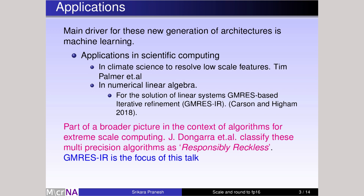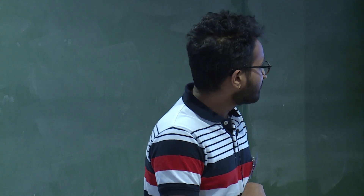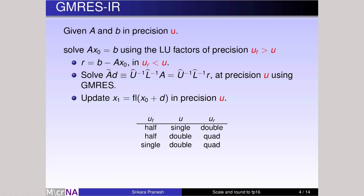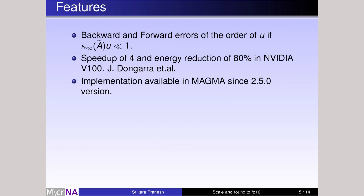I'm mostly focusing on GMRES-IR itself and the specific issues we need to address before using it for general purpose computing. Unlike usual iterative refinement, it will guarantee a small forward and backward error until a particular condition is satisfied. Here, Ã is the condition number of the preconditioned matrix, unlike in usual iterative refinement where it is the condition number of the matrix itself. That's one really important point. Jack and his group have demonstrated in several publications that using hardware like the NVIDIA V100, you can obtain up to four times speedup compared to LAPACK and up to 80% savings in energy.